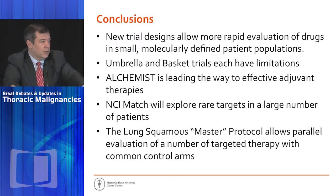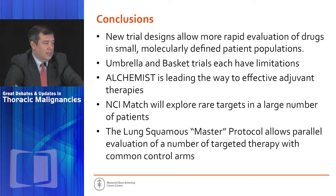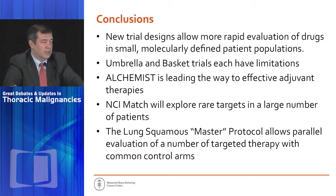In conclusion, new trial designs allow for more rapid evaluation of drugs in small molecularly defined patient populations. Umbrella and basket trials each have their limitations. ALCHEMIST is leading the way to effective adjuvant therapies. NCI MATCH will explore rare targets across a large number of patients. The Lung MAP master protocol allows parallel evaluation of a number of targeted therapies, but has its complications as well.